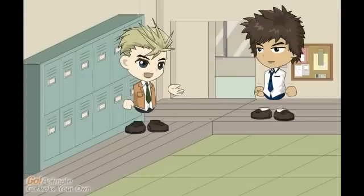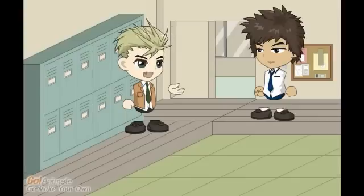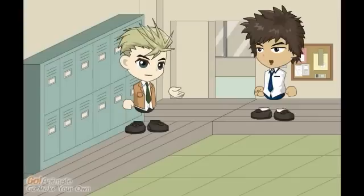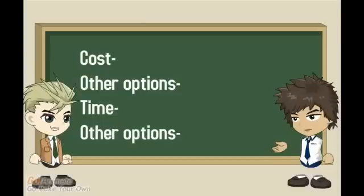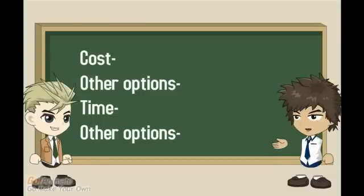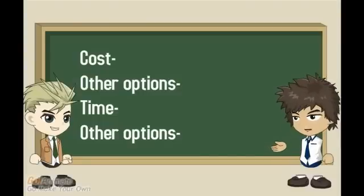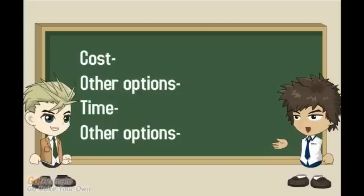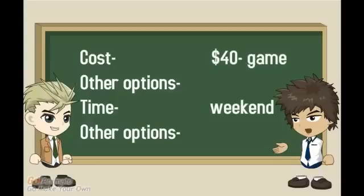But how do I decide when to spend time or money on something? Figure out how much the time and money is worth to you. Here's a chart with four categories: what it cost, what you could have spent it on, how much time it took, and what you could have spent the time on.